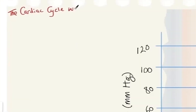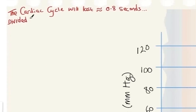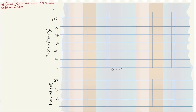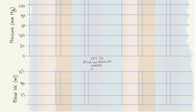The cardiac cycle lasts approximately 0.8 seconds and can be divided into three steps as seen in the previous lesson. Step one lasts approximately 0.4 seconds: atrial and ventricular diastole. Step two lasts around 0.1 seconds: atrial systole. Step three lasts 0.3 seconds: ventricular systole.